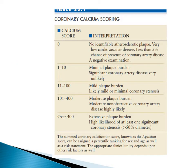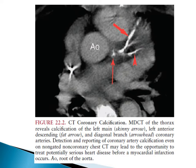In the previous session, our colleague talked about the coronary calcium scoring. A score from 0 to 10 is minimal or very low; from 10 to 100 is mild calcification; from 100 to 400 is moderate or high; and over 400 is considered very high. This picture shows calcification of the left main coronary artery, the left anterior descending, and also the diagonal.